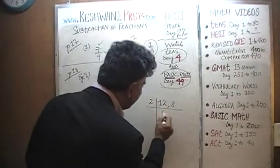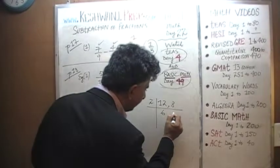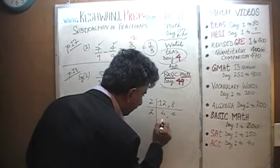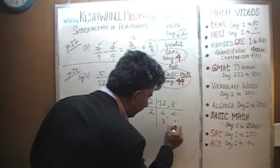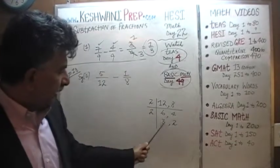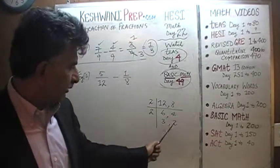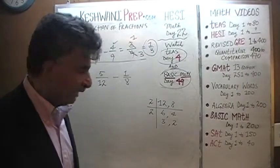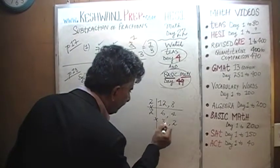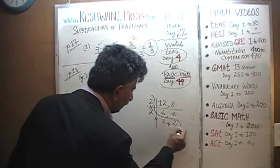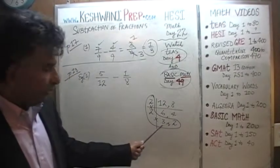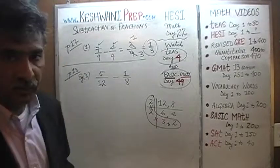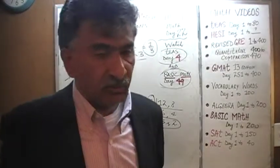6 and 4 can again be divided by 2: 6 becomes 3 and 4 becomes 2. Now 3 and 2 have nothing in common — the process stops there. The least common multiplier is 2 × 2 × 3 × 2: 2 times 2 is 4, times 3 is 12, times 2 is 24. So 24 is the common denominator we need. It doesn't have to be 24 — we could use 48 or any other multiple — but the bigger the number, the more work we do. So we look for the smallest one, which is 24.